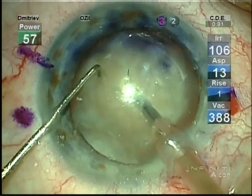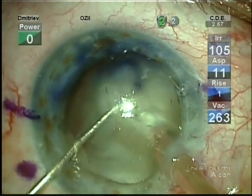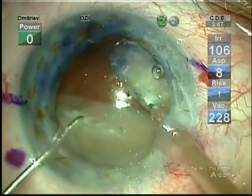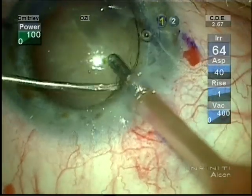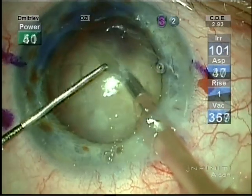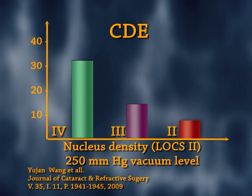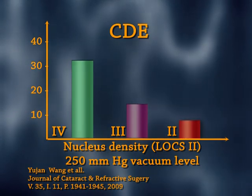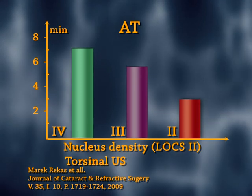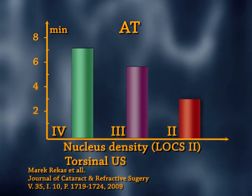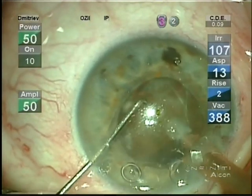In modern ophthalmology, the phacoemulsification technique is developed in a detailed fashion. However, despite the latest achievements, carrying out phacoemulsification surgery of the super-dense nucleus of the lens remains a central problem. With the super-dense nucleus, the time of surgery can be significantly increased, leading to increased characteristics of cumulative dispersed energy and aspiration time.